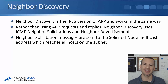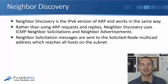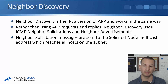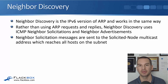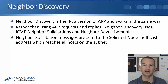Next thing to tell you about is Neighbor Discovery. Neighbor Discovery is the IPv6 version of IPv4's ARP and it works in a very similar way. But rather than using ARP requests and replies, Neighbor Discovery uses ICMP neighbor solicitations and neighbor advertisements — basically the equivalent of ARP requests and replies. Neighbor solicitation messages are sent to the solicited-node multicast address, which reaches all hosts on that subnet.